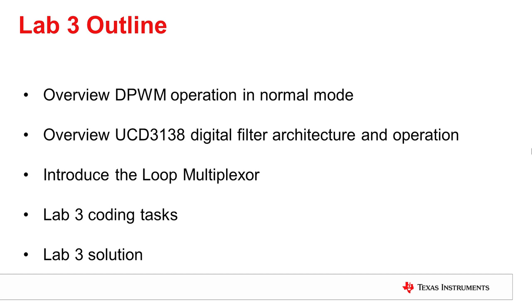In the previous tutorial, we discussed the DPWM operation in open loop mode, where the PWM outputs were determined solely by the values of the DPWM registers. In this tutorial, we will discuss the DPWM operation in normal mode, where the DPWM outputs are modulated by a filter. I will then discuss the filter architecture and operation in more detail. We will also introduce the loop multiplexer. I recommend familiarizing yourself with the sections of the UCD3138 Digital Power Peripherals Programmer's Manual on the filters, the loop mux, and the DPWM normal mode operation.